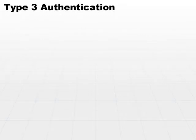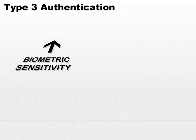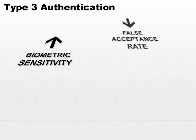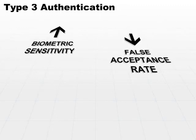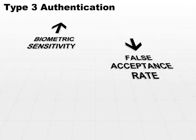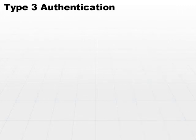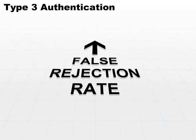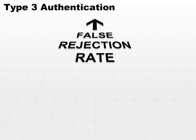Now, the importance of the crossover error rate is that it allows us to compare two or more different biometrics. As we increase the sensitivity of a biometric, it becomes more and more sensitive, and we're going to decrease our false acceptance rate because we're not going to be accepting as many subjects — we'll certainly decrease the number of invalid subjects we accept. At the same time, however, we're going to increase our false rejection rate. More sensitivity means we reject more people.